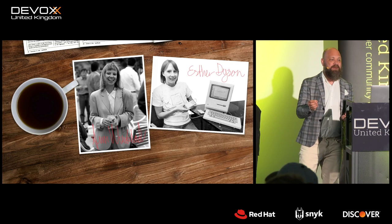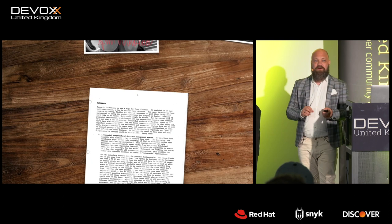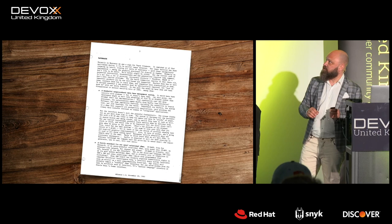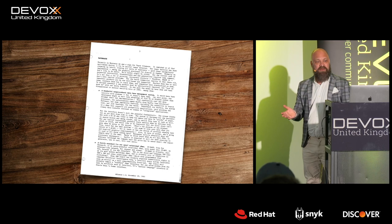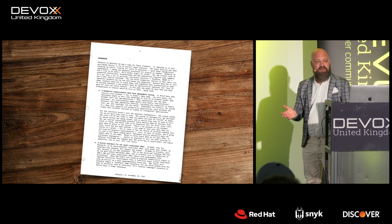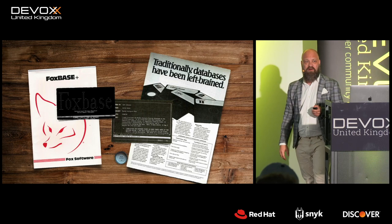She told Esther about this, and Esther wrote an article in her newsletter, the Rosen Electronic Letter — or 'Release' for short. This is the November 1983 issue of that newsletter, where she writes about the phenomenon of software that never comes to be and calls out quite a few examples. She might have been a bit early on some of these — Fox Space would later become FoxPro, which for a long time was one of Microsoft's development tools. So once in a while, it might actually be worth the wait.